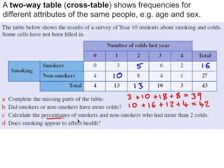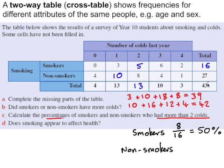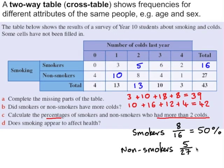Part C is asking for the percentage of smokers and non-smokers who had more than two colds. Well, for the smokers, there were sixteen of them. And how many of those sixteen had more than two colds? Six plus two is eight. So that's fifty percent of the smokers had more than two colds last year. For the non-smokers, there are twenty-seven of them. And five of those twenty-seven had more than two colds last year. Which is close to nineteen percent.